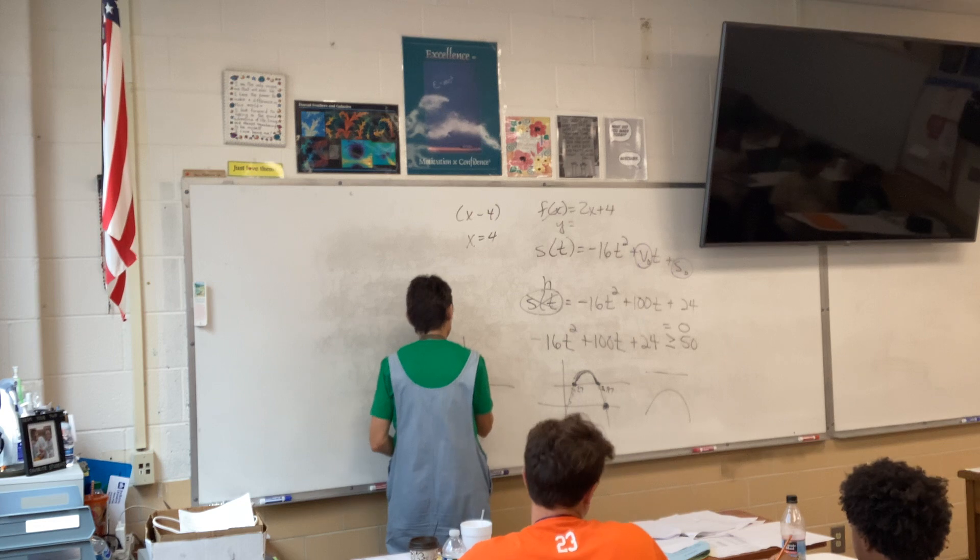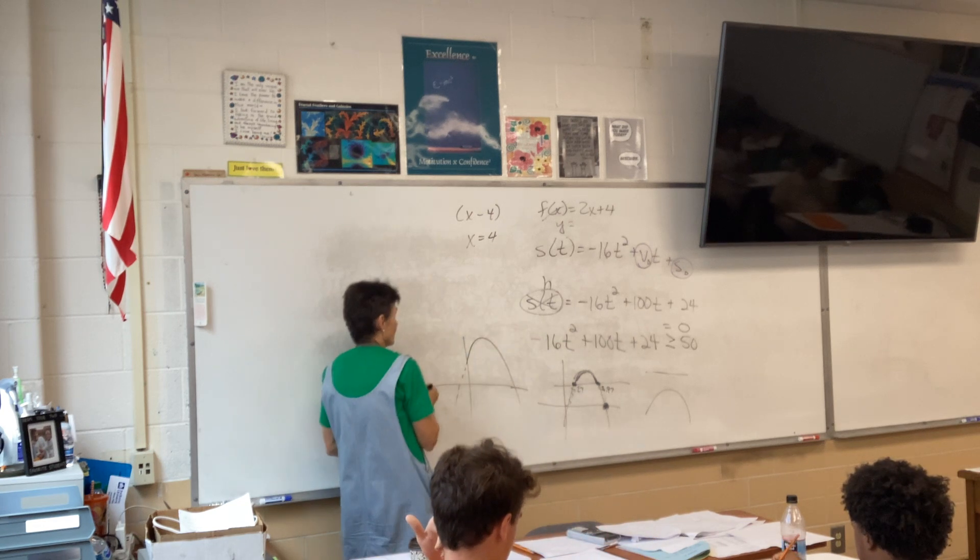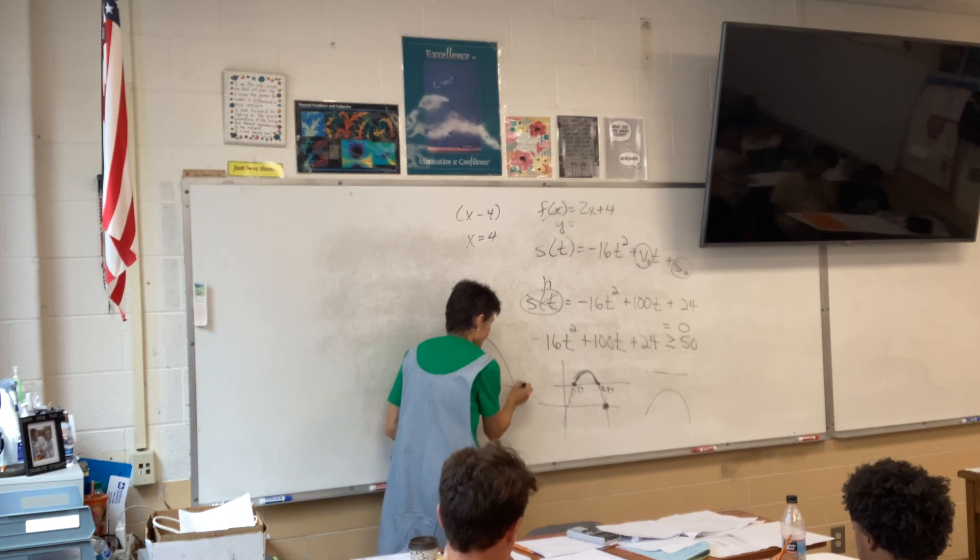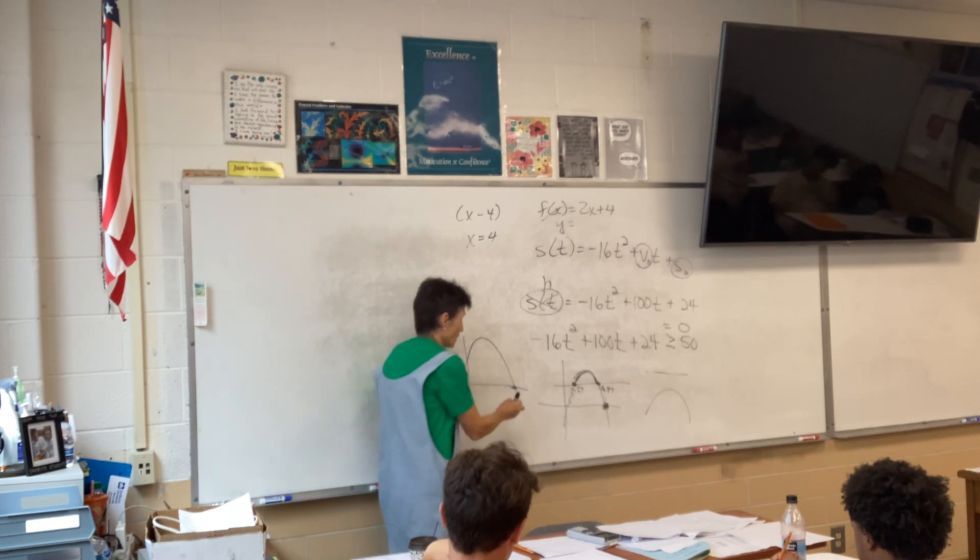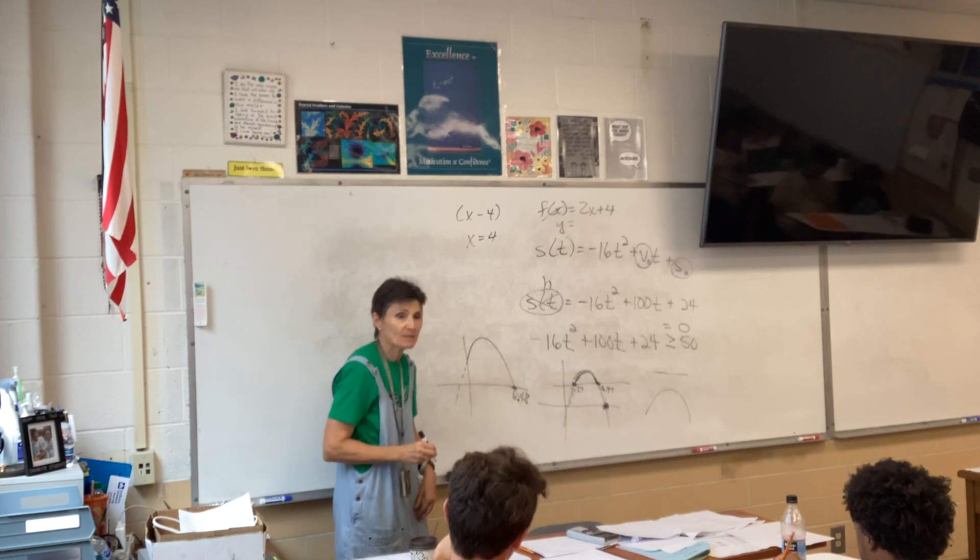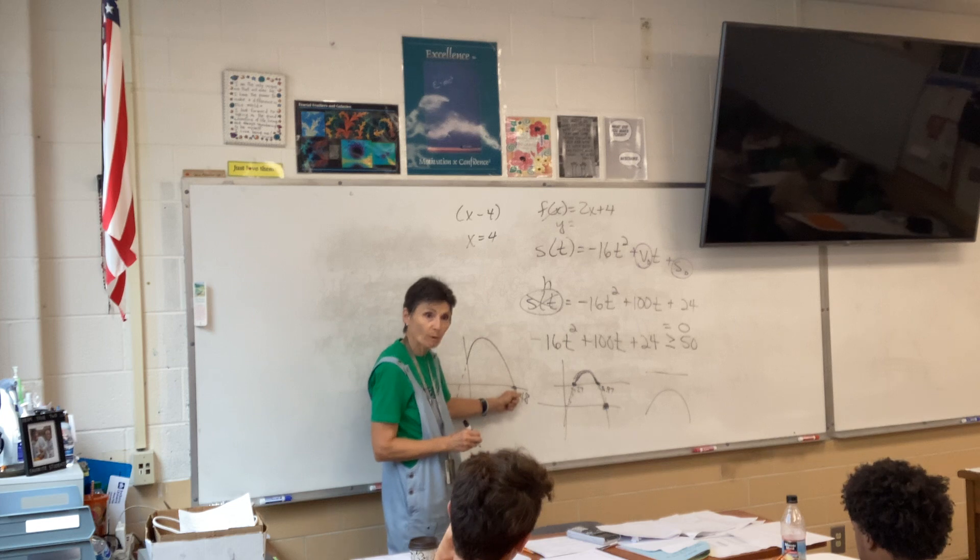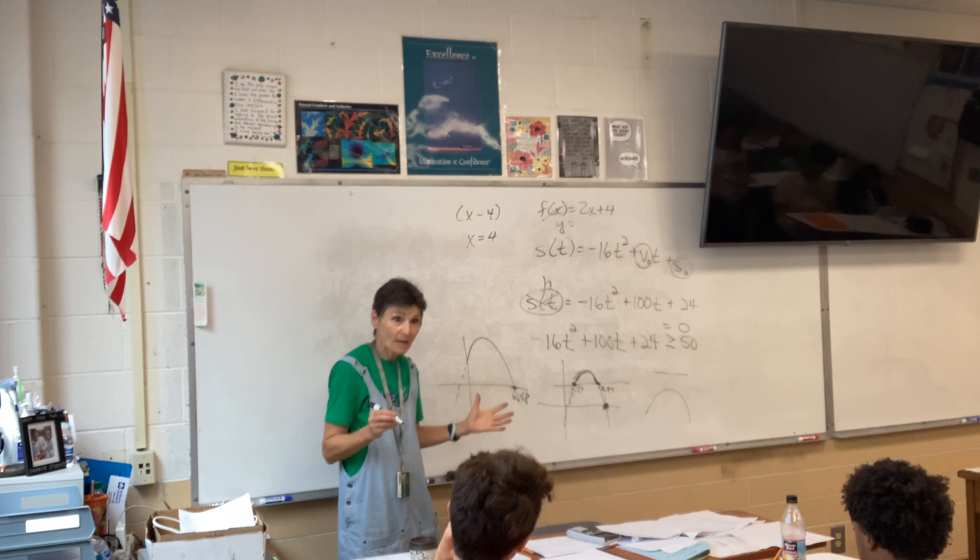So you'll type in this equation, and then second calc zero. And did you get 7.9? I got 6.48. 6.48. Getting all kinds of different answers. Anybody have one of those? 6.48. We're going with 6.48. That's where it hits the ground.